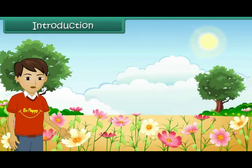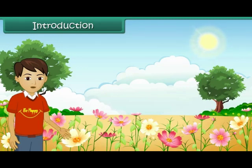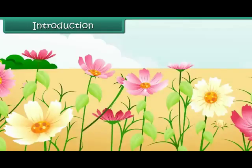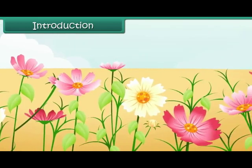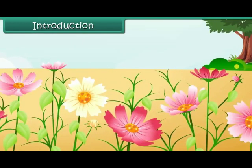The part of a plant that attracts us to it is flowers. Flowers in full bloom make us cheerful. They make our lives colorful. Just as there is a variety of flowers, there is a wide array of leaves. It is a sheer delight to watch leaves and flowers of different shapes and sizes.